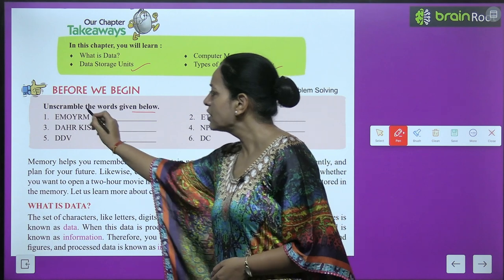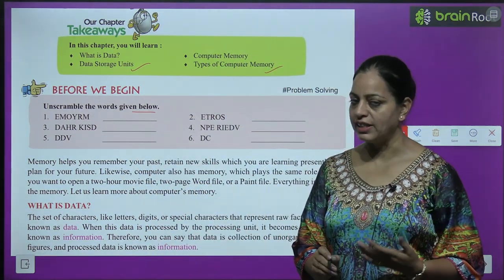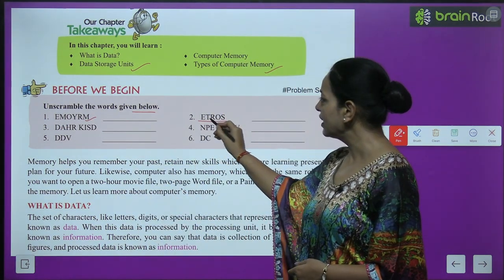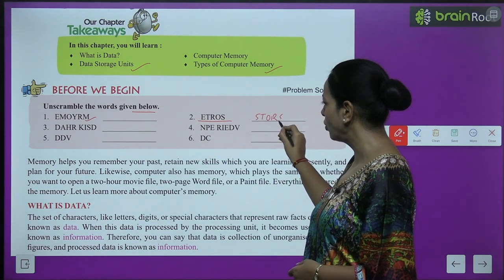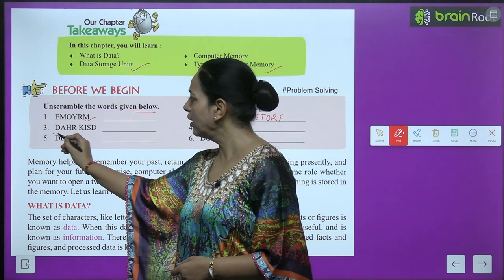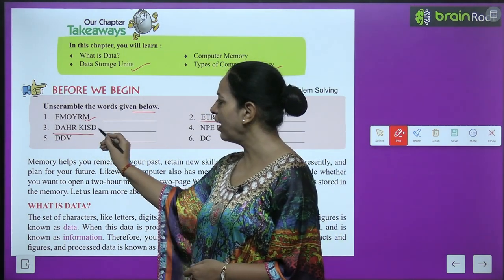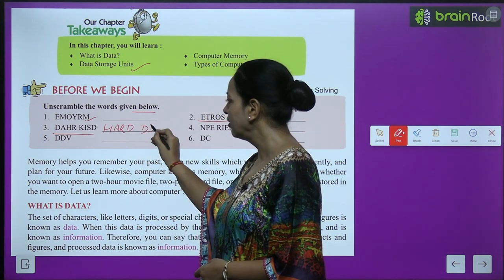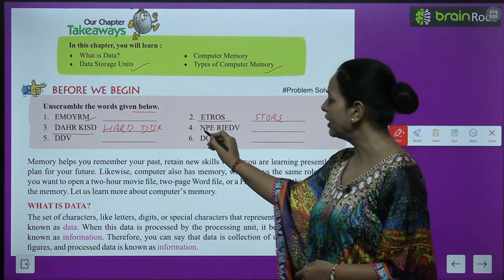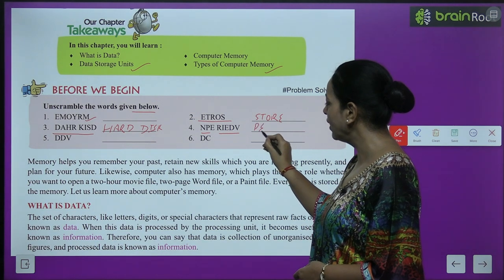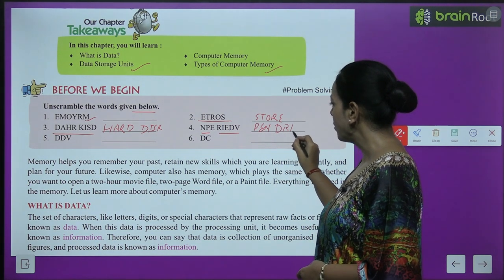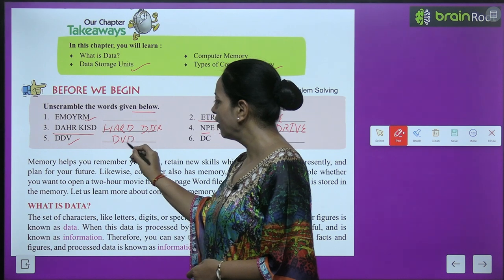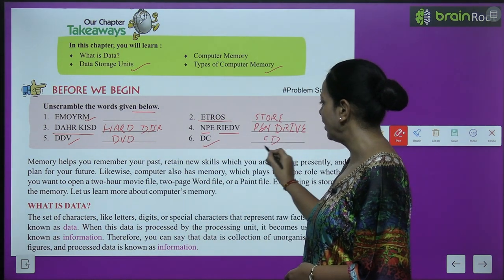Before we begin, let's unscramble the words given below. The first one is Memory. The second one is S-T-O-R-E, which is Store. The third one is D-A-H-R-K-I-S-T, which is Hard Disk. The fourth one is pen drive. Here it is given D-D-V, so it is DVD, and D-C is CD.